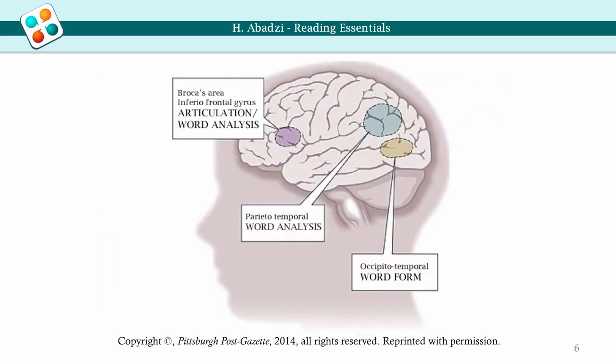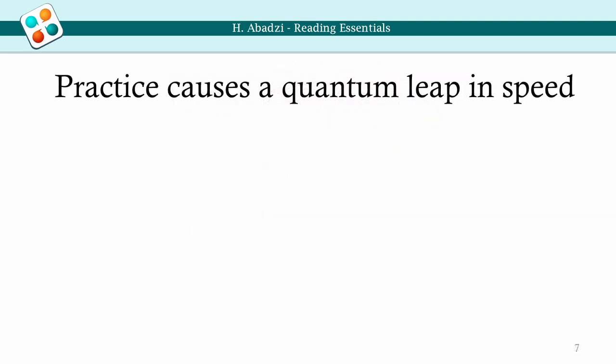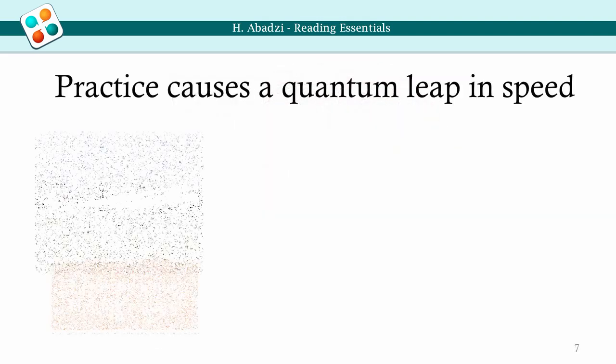Brain imaging shows that halting readers activate various areas related to letter recognition. As speed increases with practice, an area gets activated approximately behind your left ear — it is called the visual word form area, or fusiform gyrus. It is normally used to recognize faces and shapes. The process is more like an airplane taxiing on a runway and then taking off.